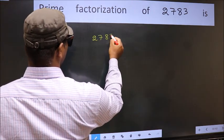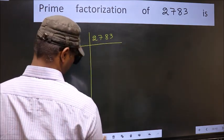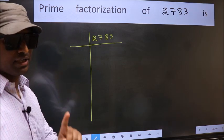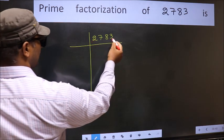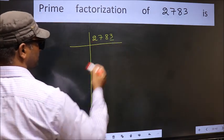2783. This is your step 1. Next, in this number, last digit 3 is not even. So this is not divisible by 2.